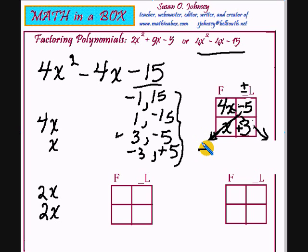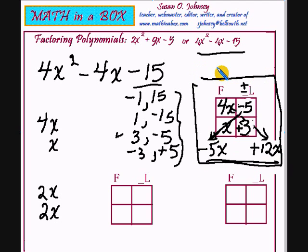Going across we have a negative 5x and going across this way we have a positive 12x and I'm afraid that still didn't work. So it appears that none of the 4 choices work with the 4x times x. So this box appears to be not the one we need to use.